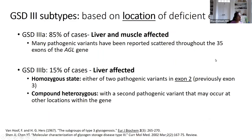There are two recognized types of GSD type 3. Both are caused by the same enzyme deficiency and same gene — it's the nature of the mutations that determines involvement. GSD type 3A involves both liver and muscle, representing 85% of cases. GSD type 3B, representing 15% of cases, primarily affects only the liver.